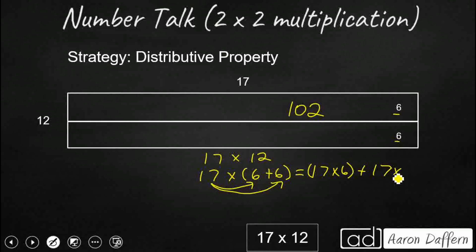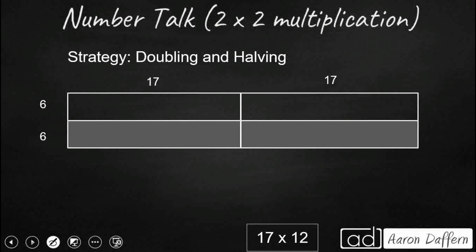And then really what we're doing is we're just going to end up doubling that. It's going to be another 17 times 6. That's another 102. Get back to our 204.